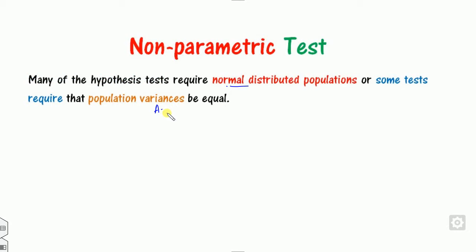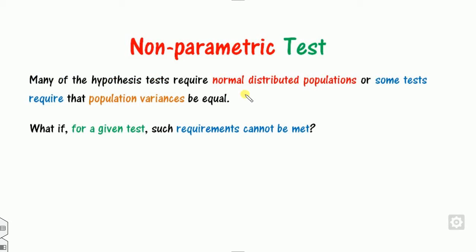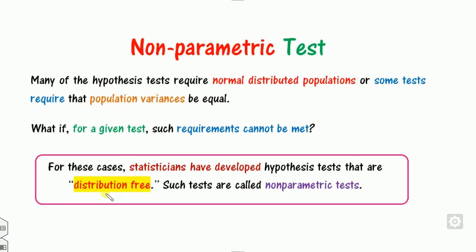What will happen if for a given test such requirements are not met — meaning the distribution is not normally distributed or the population variances are not equal? In order to handle this, we require testing that is called distribution-free, and such tests are called non-parametric tests. That is why these tests are as important as the parametric tests.